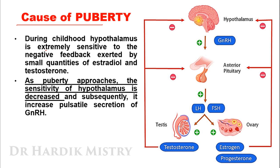Now the cause of puberty: during childhood, the hypothalamus is extremely sensitive to the negative feedback exerted by the small quantities of estradiol and testosterone. As puberty approaches, the sensitivity of the hypothalamus is decreased, and subsequently it increases the pulsatile secretion of GnRH. That is the reason behind the development of puberty.